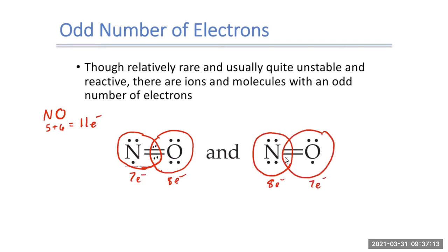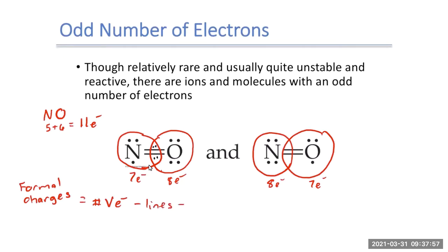So which structure is the better structure? They're both technically correct — we've drawn 11 valence electrons total in each. To determine which is better, we use formal charges. Formal charge equals the number of valence electrons minus the number of bonds minus the lone pair electrons.